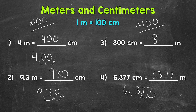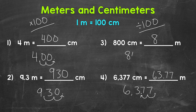To recap: when we go from centimeters to meters, we divide by 100, and we can do that by moving the decimal twice to the left — that shifts our digits two places to the right, dividing our number by 100. Let's try that for number 3 as well: 800, decimal goes at the end, move it twice to the left — once, twice — decimal goes in between the 8 and the 0, giving us 8. That method works for number 3 as well.